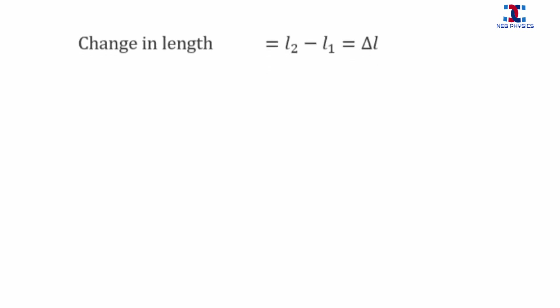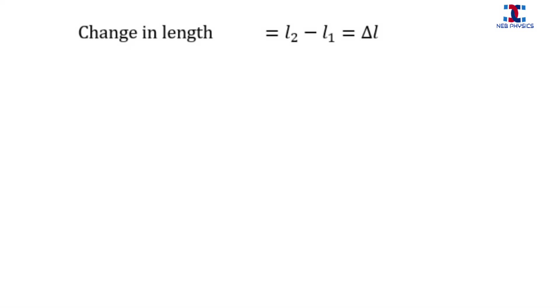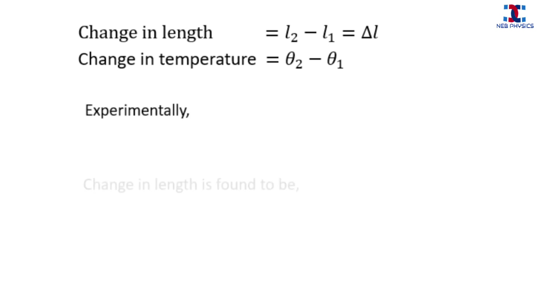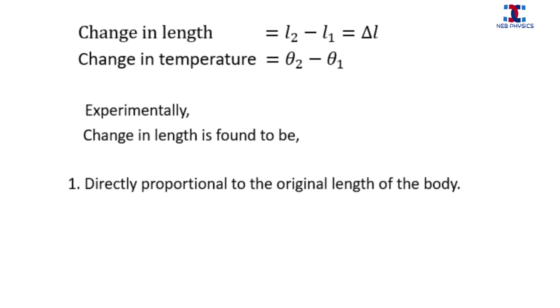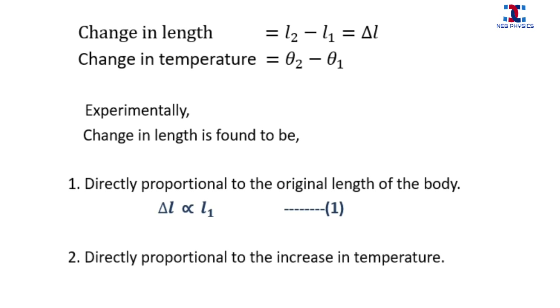Change in length equals final length minus initial length, equal to ΔL. Change in temperature equals final temperature minus initial temperature, that is θ₂ − θ₁. Experimentally, the change in length is found to be directly proportional to the original length L₁ — let this be equation 1. Also, the change in length is directly proportional to the change in temperature, so ΔL ∝ (θ₂ − θ₁) — let this be equation 2.